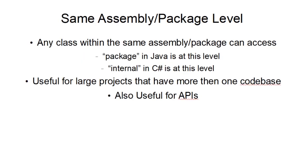Next, we have the same assembly or package level — any class within the same package or assembly can access it. In Java this is package, in C# this is internal. This is useful for pretty large projects with more than one code base, like different assemblies, and also useful for APIs. If you're making an API, you need a method accessible throughout all your code but not to someone implementing the API — that's kind of where it's useful.